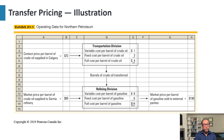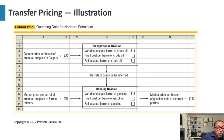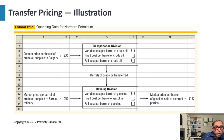Here is an example of transfer pricing using crude oil. The contract price per barrel of crude oil supplied in Calgary is $72 per barrel, which goes to the Transportation Division. The Transportation Division incurs a variable cost of $1 per barrel and a fixed cost of $3 per barrel, adding up to $4. So they buy at $72, add $4, bringing the cost to $76.